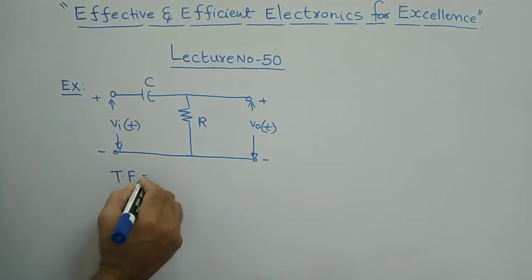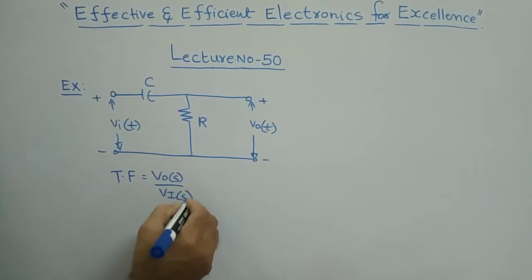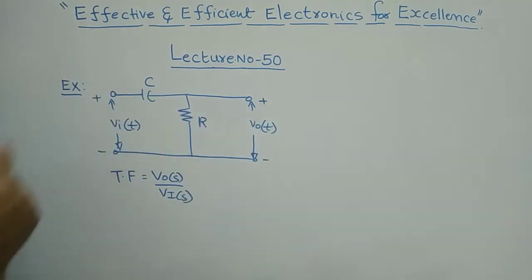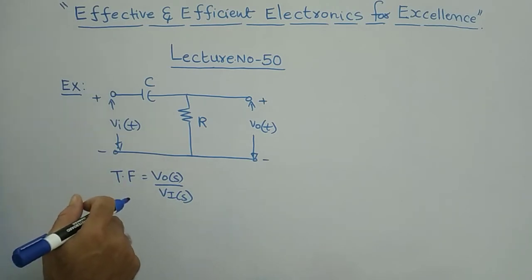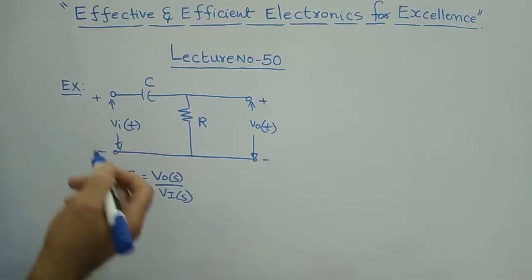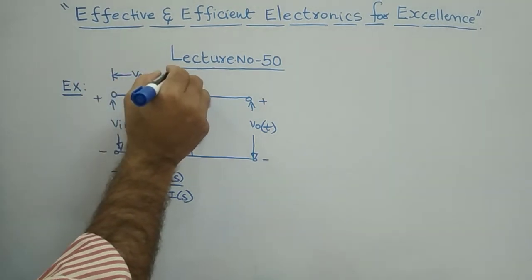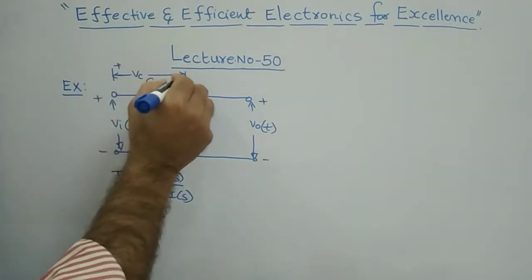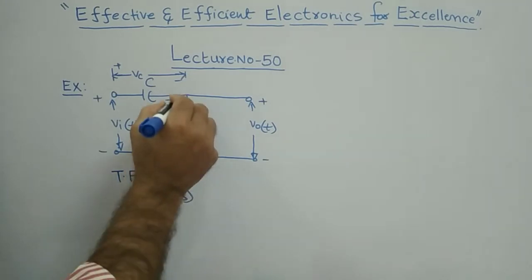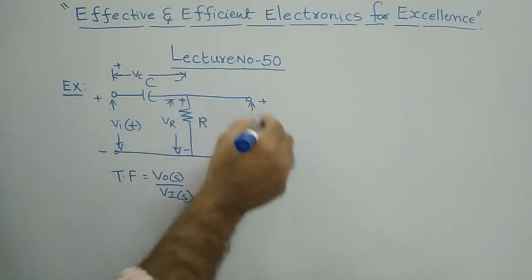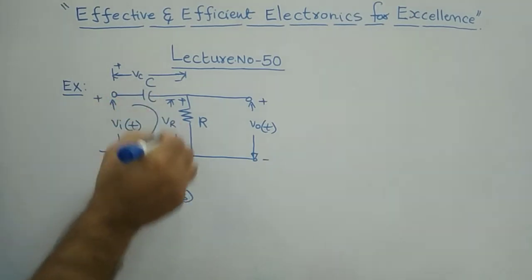For this differentiator circuit, the transfer function is V_naught(s) divided by V_i(s) — the ratio of output to input in the Laplace (s-domain). Let us assume V_C is the voltage across the capacitance and V_R is the voltage across the resistance. V_naught(t) is the output, and we assume current I is flowing in the loop.